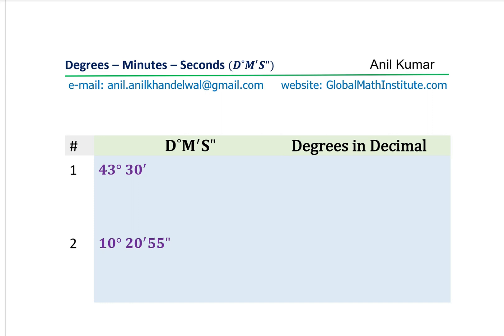For 43 degrees and 30 minutes, we want to write this as 43-point-something degrees. The 43 degrees stays as is. For the minutes, to convert minutes to degrees we divide by 60, so we multiply 30 by 1/60. That gives 43 degrees plus 0.5 degrees, because each minute equals 1/60 of a degree.